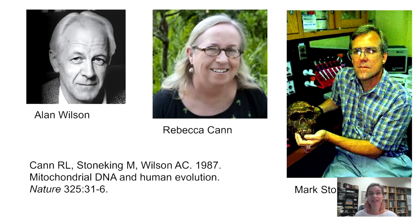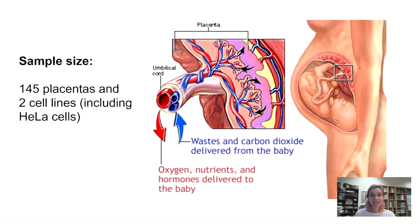Back to 1987. Cann and Stoneking realized that they could use the higher mutation rate and higher copy number of mitochondrial DNA to work out how the variation we see in mitochondrial DNA today was patterned, how it evolved, and how it was inherited. They knew that one of the most energy-intensive tissues in the human body is the placenta — it supports a developing fetus and is therefore super rich in mitochondria and mitochondrial DNA.